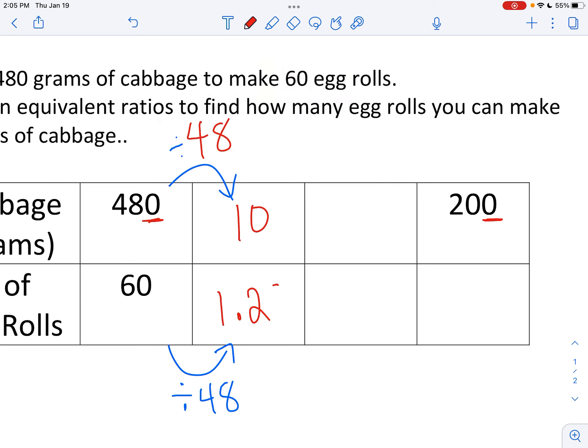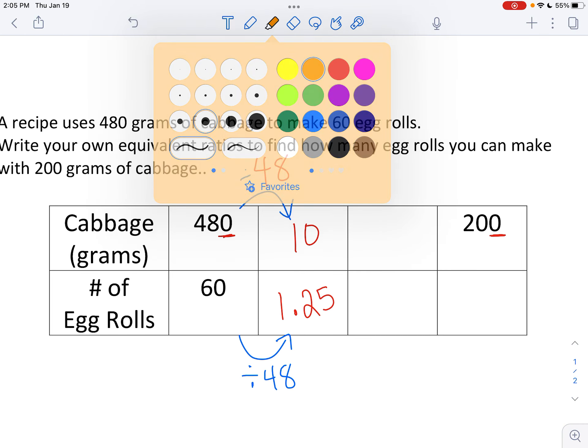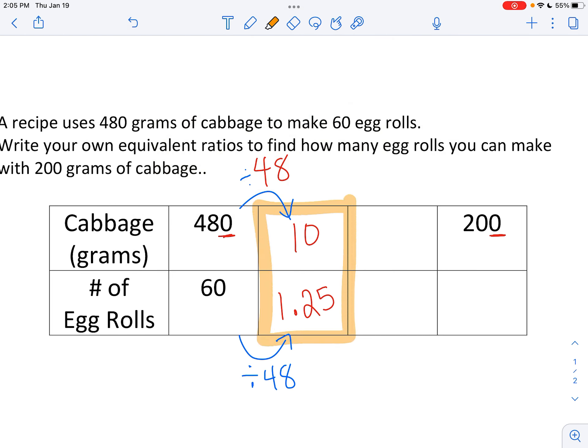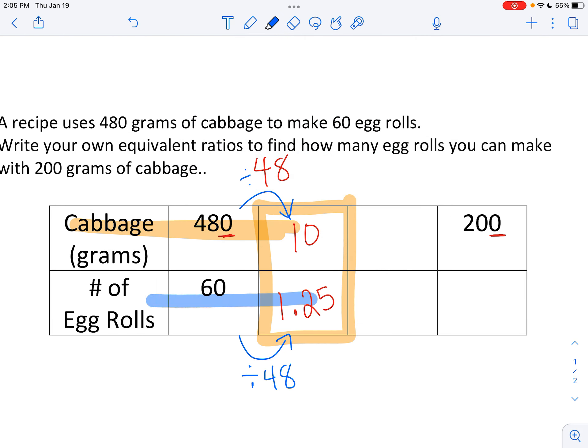1 and 25 hundredths. So when I read this column, it says 10 cabbage, 10 grams of cabbage, to make 1 and a quarter egg rolls. Would I make 1.25 egg rolls? Nope, I wouldn't. Right? But that's not what I'm trying to do.